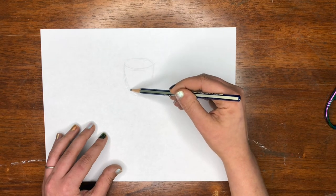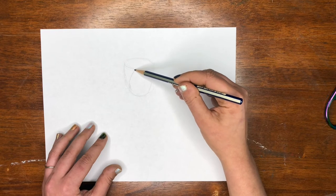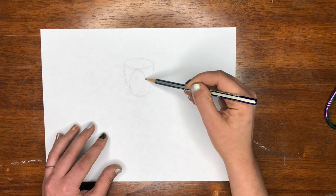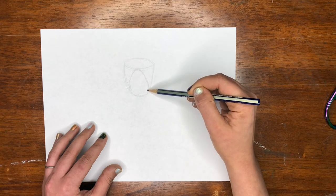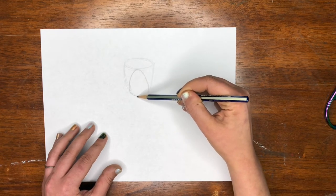So we're going to do our first petal is the one in the front. It's going to arch up to the bottom of that oval and come back down. So there's our first petal.